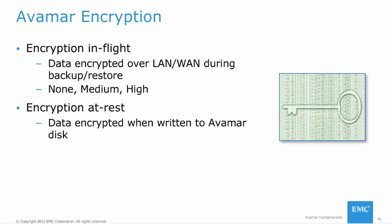For added data security, Avamar provides data encryption both in-flight and at-rest. In-flight encryption occurs during a backup or restore—data is encrypted by the client before it is sent over the network, protecting it from being compromised as it travels. Encryption strength can be set to medium or high, or disabled altogether. It is always recommended to use encryption, especially when performing a backup over a wide area network. Encryption at rest occurs when data is written to the Avamar disk—if enabled, all data is stored in an encrypted format so that even if data on disk was compromised, it would still be unreadable. Encryption at rest provides a high level of security for backed-up data.